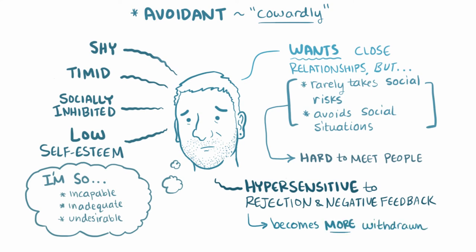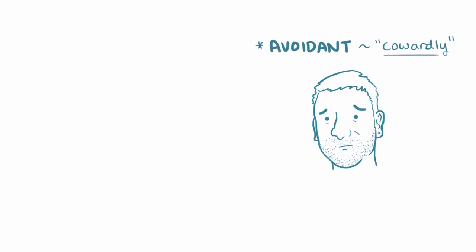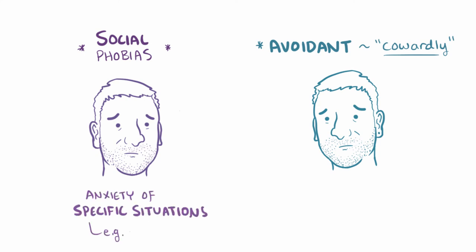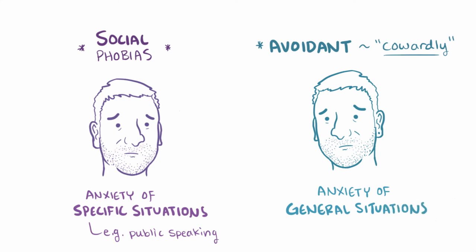There is some overlap between avoidant personality disorder and social phobias, but one key difference is that social phobias tend to be focused on anxiety of specific situations, like public speaking or dancing in public, while avoidant personality disorder is defined by an anxiety of social situations more generally.